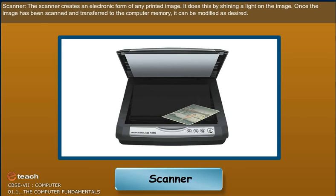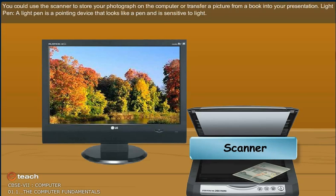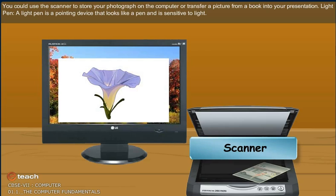Scanner: The scanner creates an electronic form of any printed image. It does this by shining a light on the image. Once the image has been scanned and transferred to the computer memory, it can be modified as desired. You could use the scanner to store your photograph on the computer or transfer a picture from a book into your presentation.